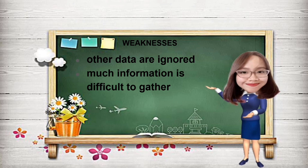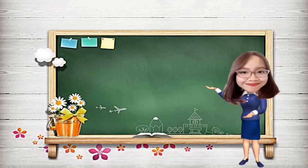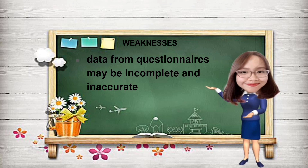Number four, much information is difficult to gather. An example for this is sensitive issues like premarital sex, domestic violence, and the likes. Number five, if not done seriously and correctly, data from questionnaires may be incomplete or inaccurate. Researchers must be on the lookout for respondents who are just guessing and answering the instrument.